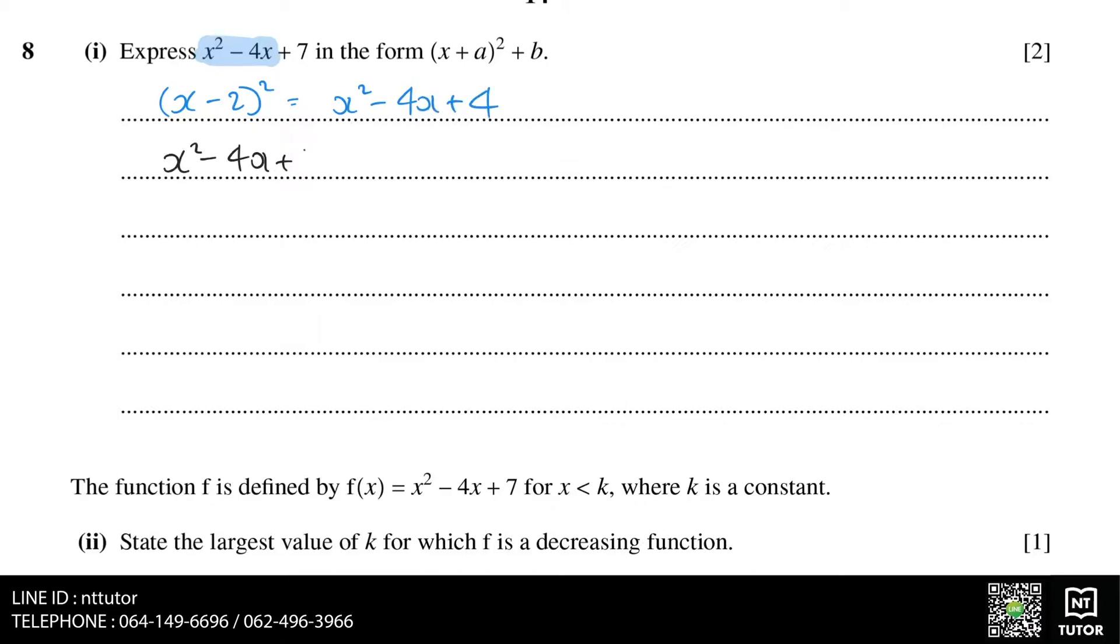So when we do (x - 2) squared, we need to minus 4 to it to keep the value the same. And therefore, our answer is (x - 2) squared plus 3, where a equals minus 2 and b equals 3.